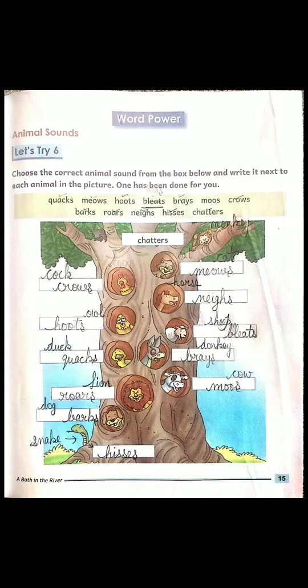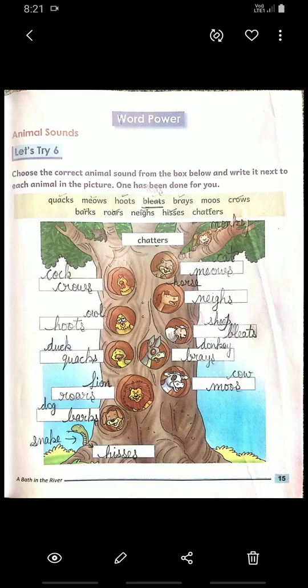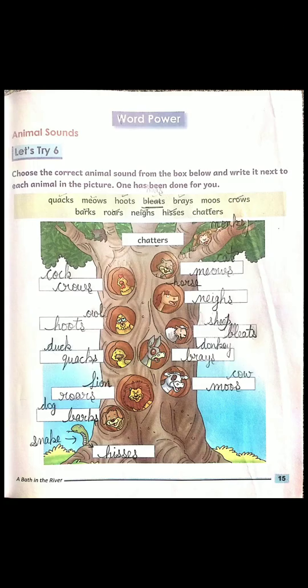Choose the correct animal sound from the box below and write it next to each animal in the picture. One has been done for you. First of all, look at the picture and we will fill the sound of the animals in the blank column. You will try to find the picture very carefully. If you find the picture then it's easy for you to fill the sound in the blank column. Is that clear students? Let's start.